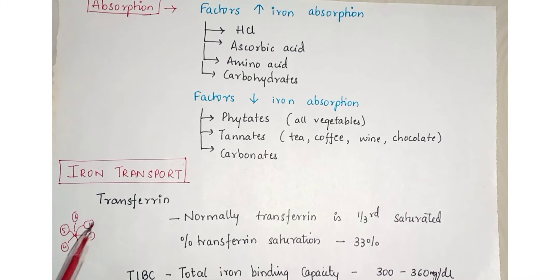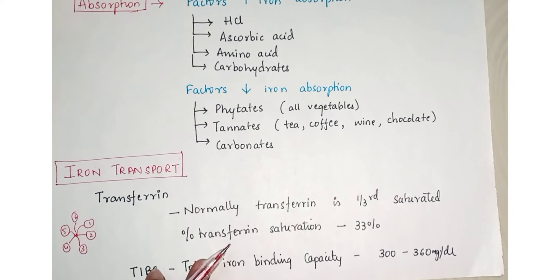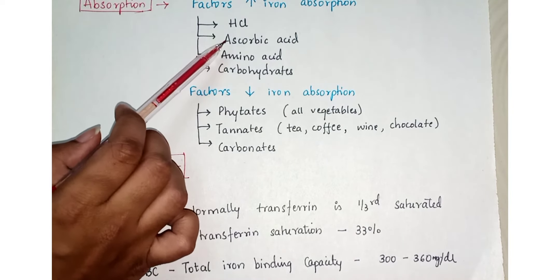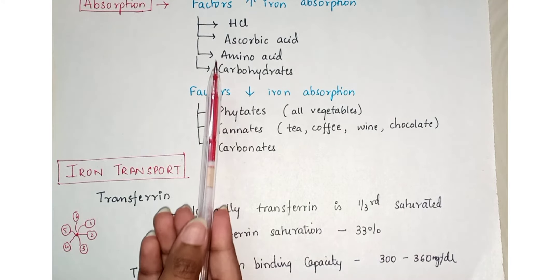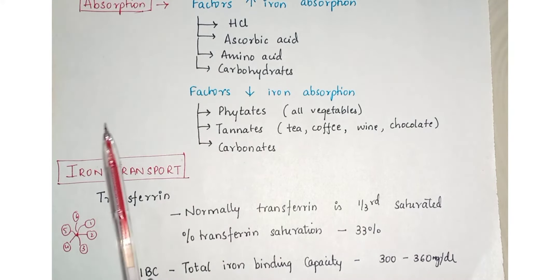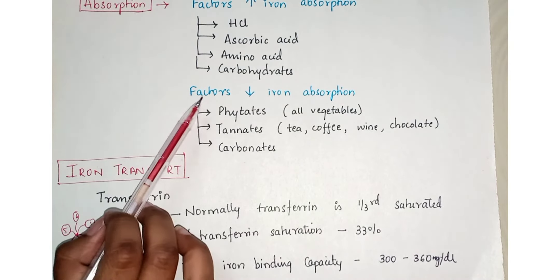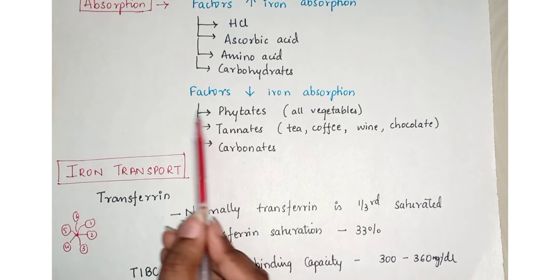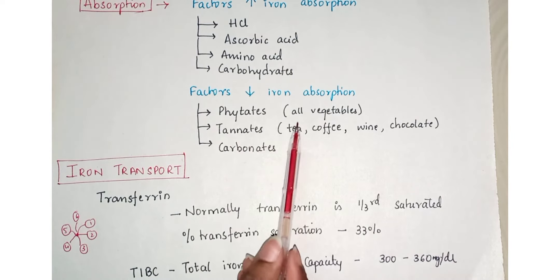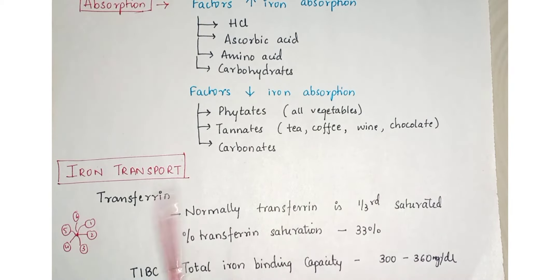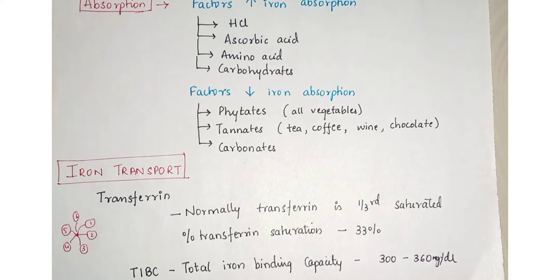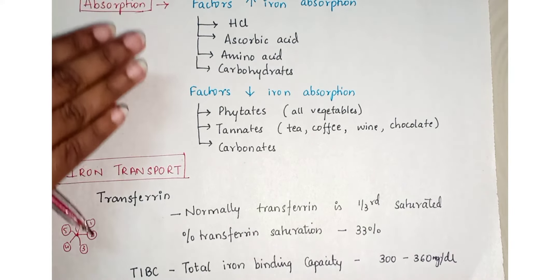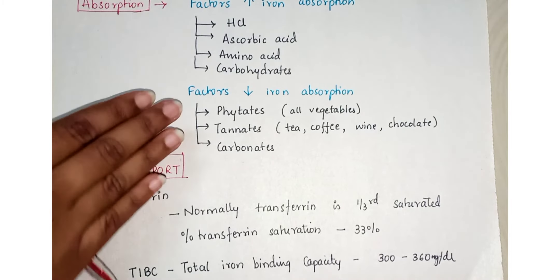Factors which increase iron absorption include HCl, ascorbic acid (vitamin C), amino acids, and carbohydrates. Factors which decrease iron absorption include phytates found in vegetables, tannates such as tea, coffee, wine, and chocolate, and carbonates also decrease iron absorption.